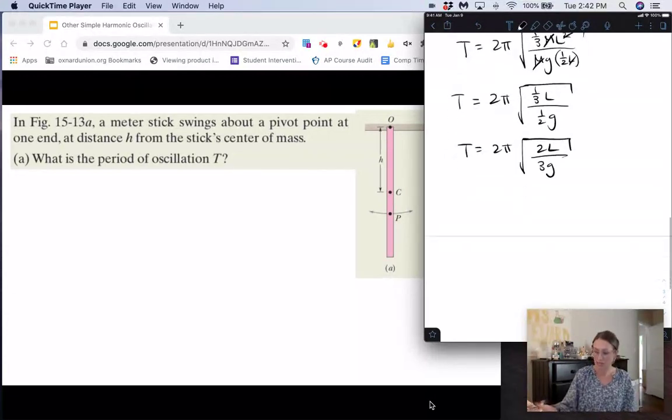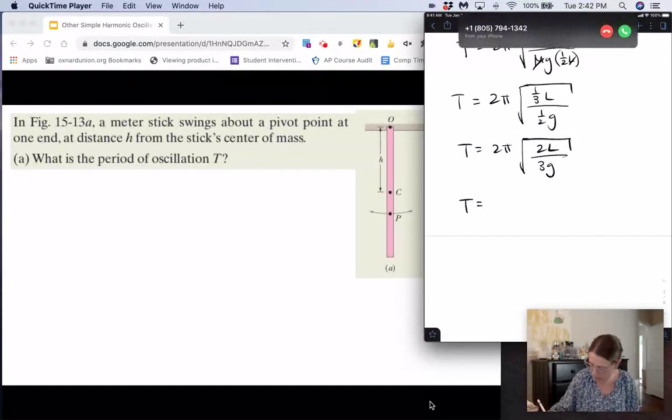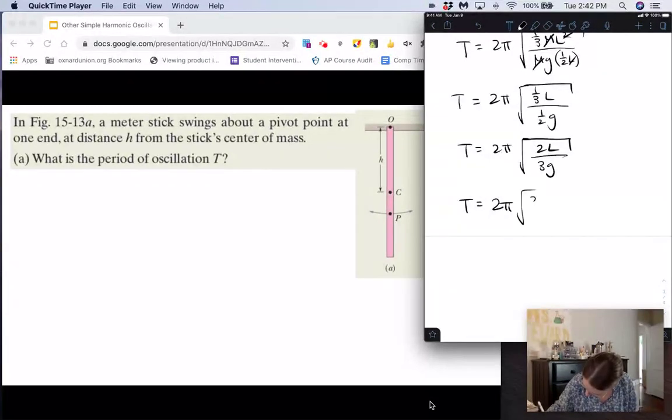Now again, this is a meter stick, so we know L is equal to one meter. g is the acceleration of gravity on earth, so we'll put in 9.8 meters per second squared for that. So we get 2π times the square root of 2 times 1 meter divided by 3 times 9.8 meters per second squared,